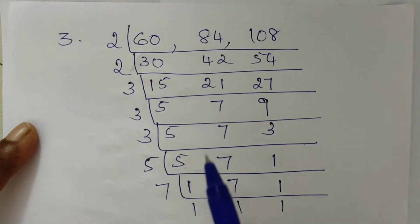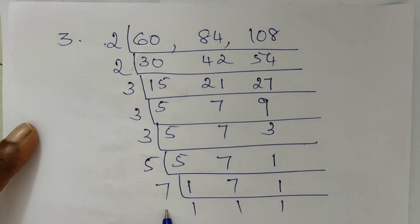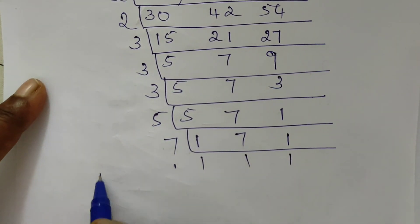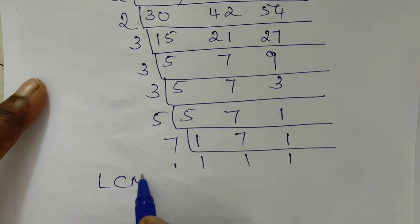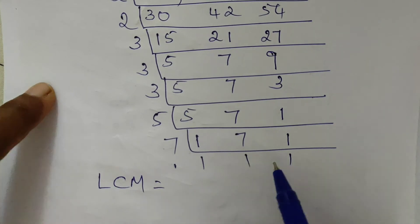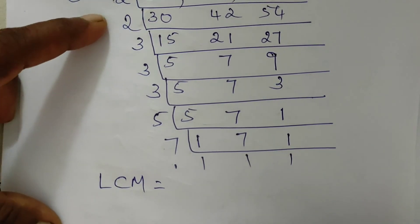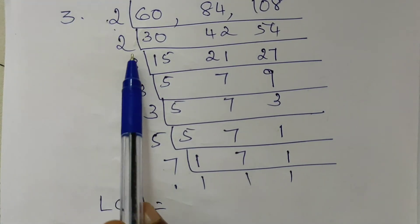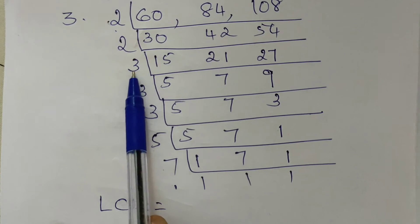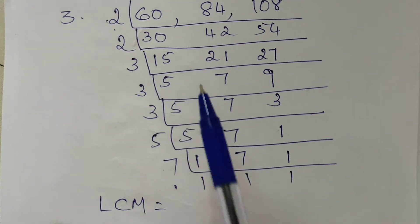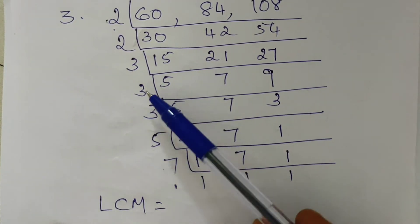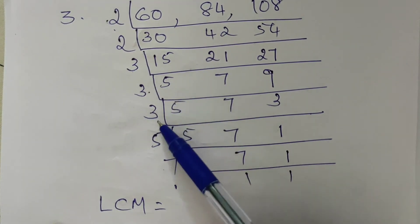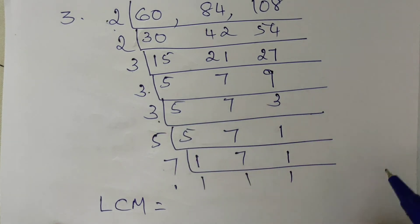LCM is the product of all the prime factors. LCM is equal to: 2 into 2 is 4, into 3 is 12, into 3 is 36, into 3 is 108.